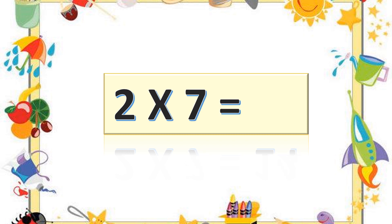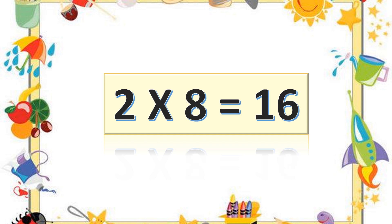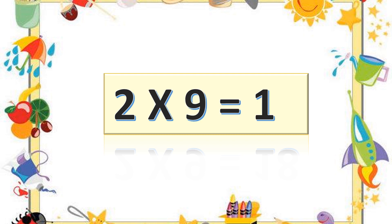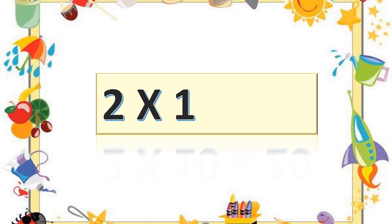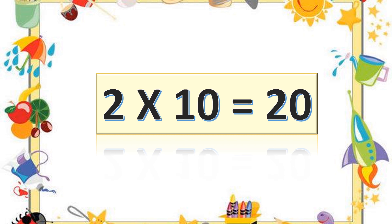Two sevens are fourteen. Two sevens are fourteen. Two eights are sixteen. Two eights are sixteen. Two nines are eighteen. Two tens are twenty. Two tens are twenty.